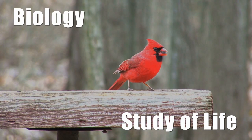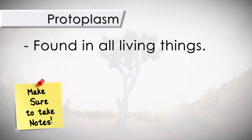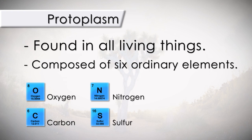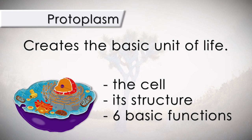Let's begin where the scientists begin. The basic substance of all life is protoplasm. Protoplasm is found in all living things. It is composed of six ordinary elements: oxygen, carbon, nitrogen, sulfur, hydrogen, and phosphorus. It is the protoplasm that creates the basic unit of life, which is the cell, its structure, and its six basic essential functions required for life.